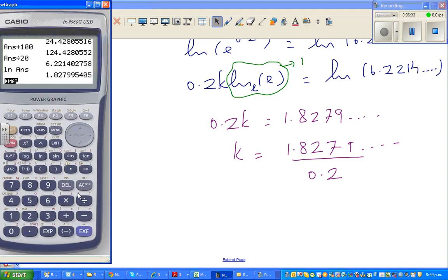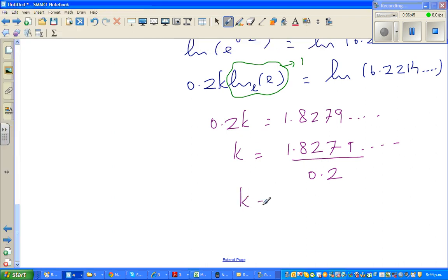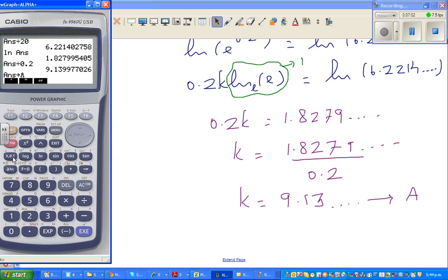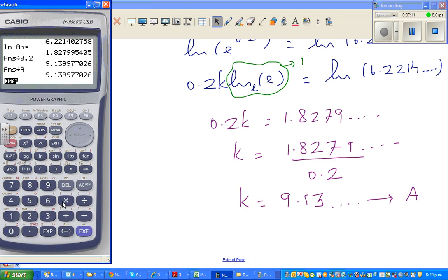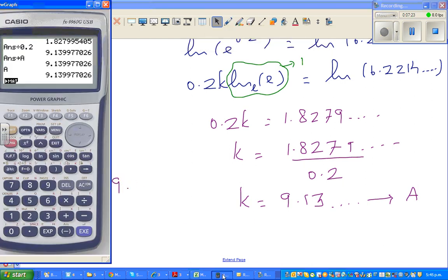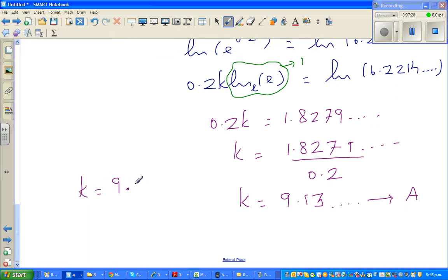So k is 9.13, and then that I'm going to save as an alpha letter. So you can press this arrow key, and shift alpha, or shift A. So this calculator has saved this whole number as A. If you press shift A, that will give you that number. I want that number to check my answer. So k is 9.14 in 2 decimal places. This is your answer.